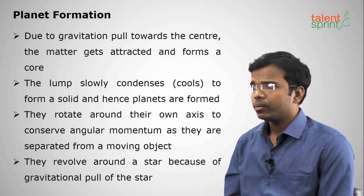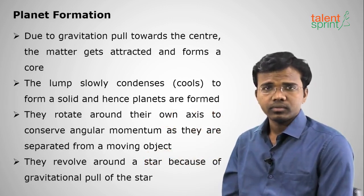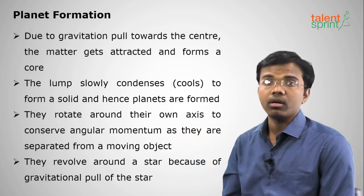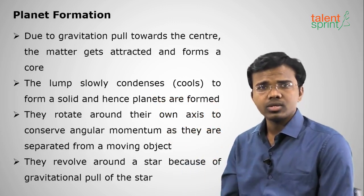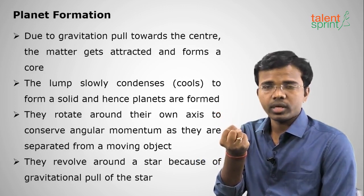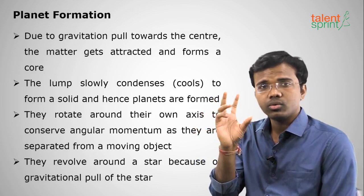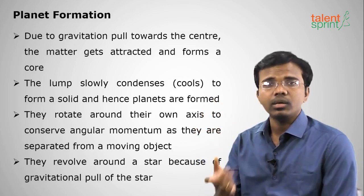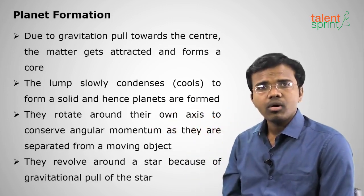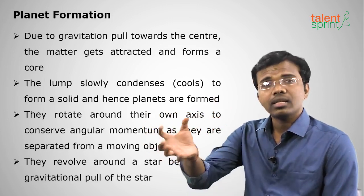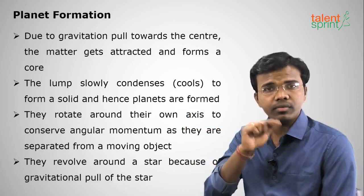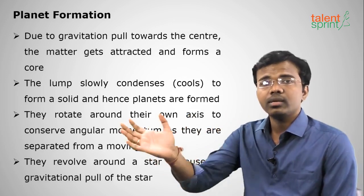Rotating on its own axis is called rotation; rotating about another body is called revolution. Planets rotate because they were separated from a moving object — the universe was a tiny ball — so to maintain angular momentum, they keep rotating on their own axis. Planets make a revolution around a star like the Sun because the Sun's gravitational pull attracts them toward its center.